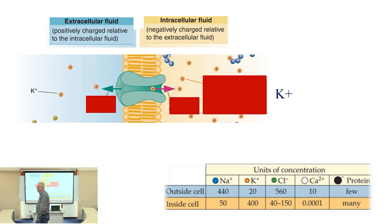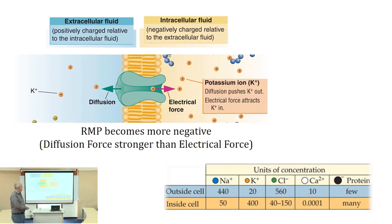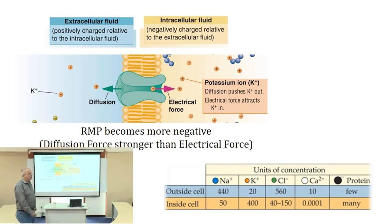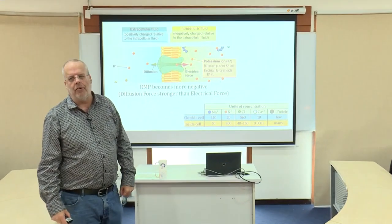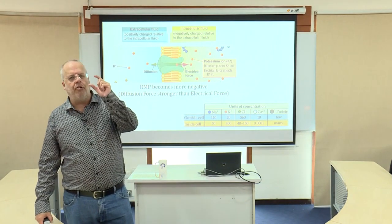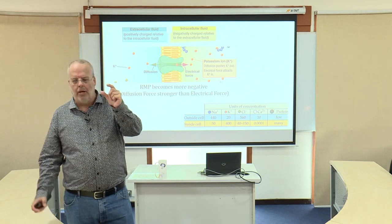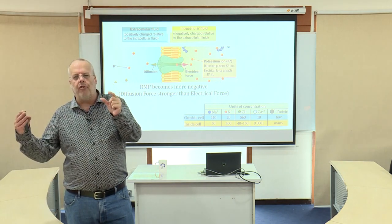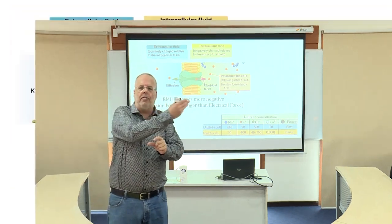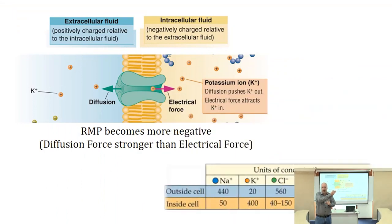Potassium — K+ — positive ion. We know there's about 20 times as much potassium inside than outside. So if we open a channel specific to potassium, the diffusion force is going to push it out of the neuron.